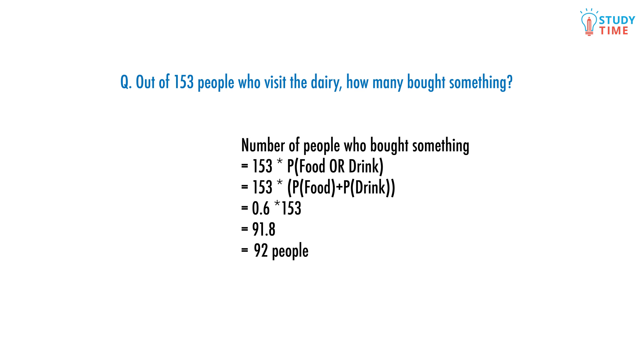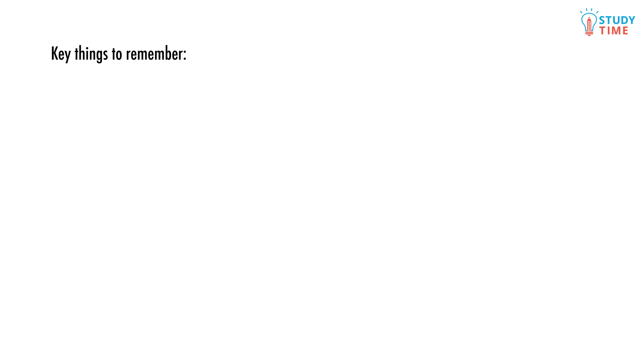All this will come up again in later videos, so here's some key points to remember for now. P of E is the probability of an event occurring. The probability of this event occurring ranges from 0, impossible, to 100% or 1, certain.